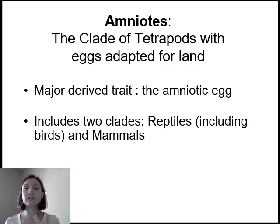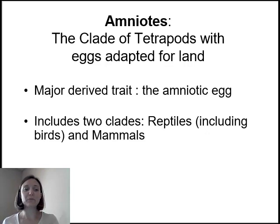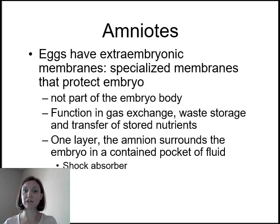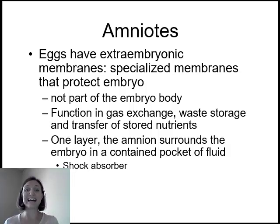There are two clades within the amniotes: the reptiles, which includes the birds, and then the mammals. So we're going to talk about what an amniotic egg is. The amniotic egg has extra embryonic membranes surrounding the embryo. These are not actually part of the embryo — they are derived from the maternal tissue — but they help to protect the embryo, cushion the embryo, and then function in gas exchange, waste storage, and transfer of nutrients.